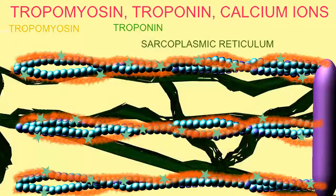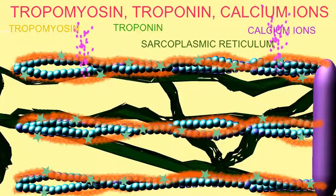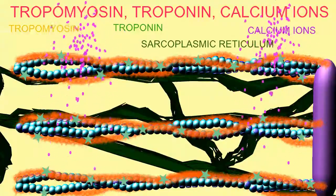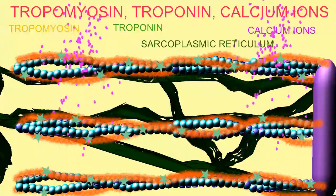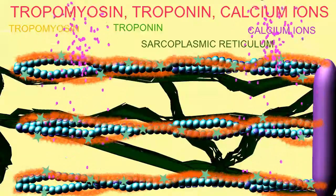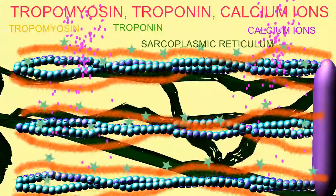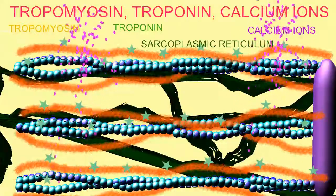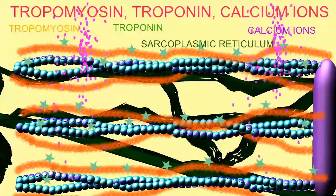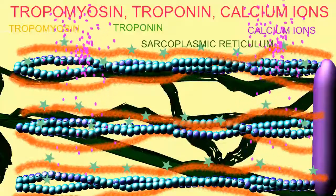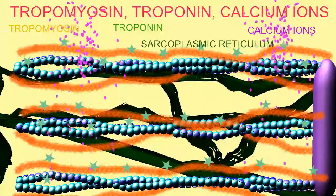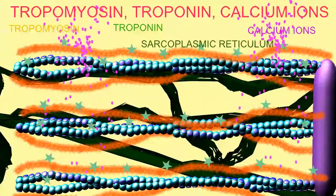When calcium is released from the sarcoplasmic reticulum, which covers the sarcomere, the calcium can bind to the troponin and move tropomyosin out of the way, which then opens the active sites of actin so that myosin globular heads can form cross bridges and initiate a contraction.